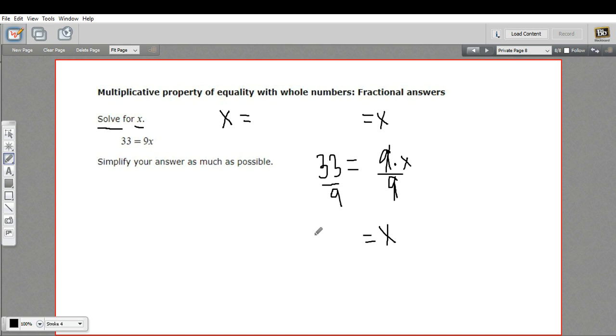And over here, we've got 33 divided by 9. I can simplify that fraction a little bit. They're both divisible by 3. 33 divided by 3 is 11. 9 divided by 3 is 3. So this is 11 over 3 equals x.